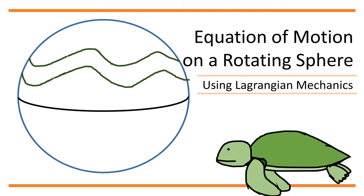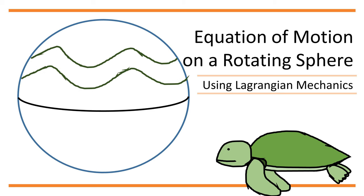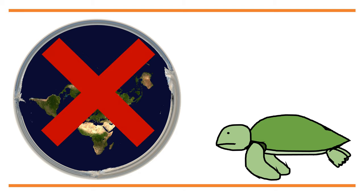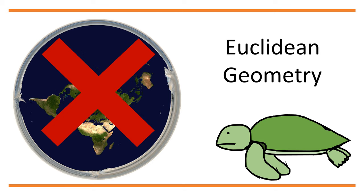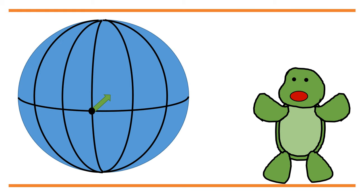We will derive the equation of motion on a rotating sphere using Lagrangian mechanics. Earth is very close to being a sphere, and ordinary Euclidean geometry does not apply on its surface. This makes describing the equations of motion of an object on Earth's surface already very challenging.